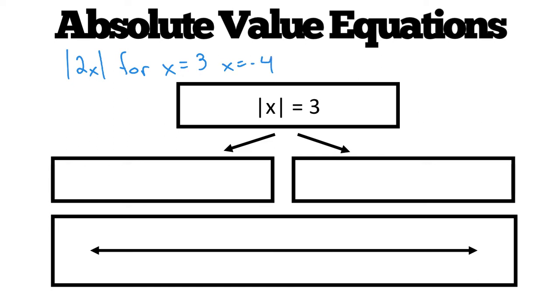To evaluate an absolute value expression, to evaluate for x equals 3, it will be absolute value of 2 times 3, which is the absolute value of 6, which is just 6.